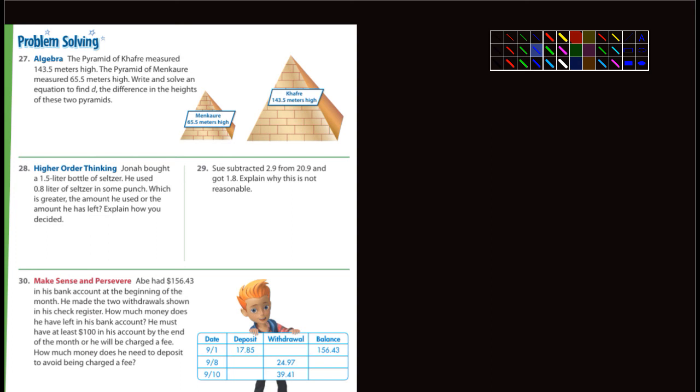Let's go to the last page, the problem solving. The pyramid I can't pronounce measured 143.5 meters high, and the pyramid of Menkaure is 65.5 meters high. Write and solve an equation to find d, the difference in the heights. So we're going to subtract. From 143.5, you're going to subtract 65.5, and you're just going to set that up as a subtraction problem. Five from five is zero, decimal comes straight down, five from three—you can't do that, so we're going to have to borrow.